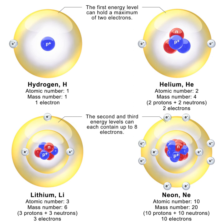For example, carbon has atomic number 6, and its abundant carbon-12 isotope has 6 neutrons, whereas its rare carbon-13 isotope has 7 neutrons. Some elements occur in nature with only one stable isotope, such as fluorine. Other elements occur with many stable isotopes, such as tin with 10 stable isotopes.